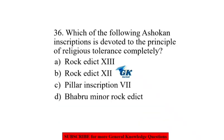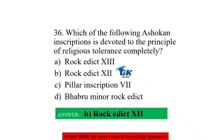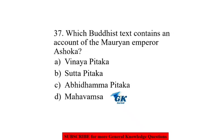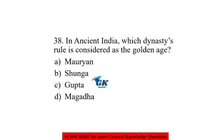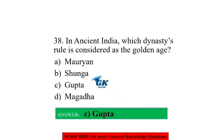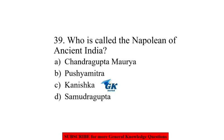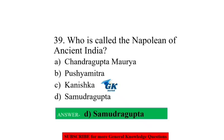Which of the following Ashokan inscriptions is devoted completely to the principle of religious tolerance? Rock Edict 12. Which Buddhist text contains an account of the Mauryan Emperor Ashoka? Abhidhamma Pitaka. In ancient India, which dynasty's rule is considered the golden age? Gupta. Who is called the Napoleon of ancient India? Samudragupta.